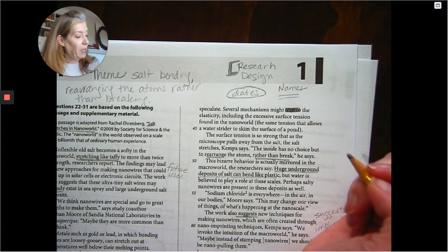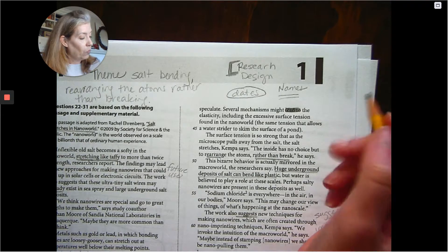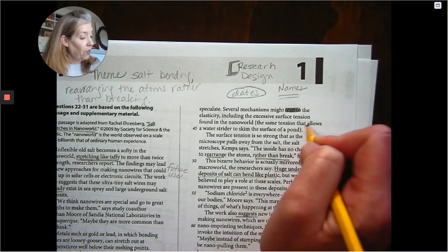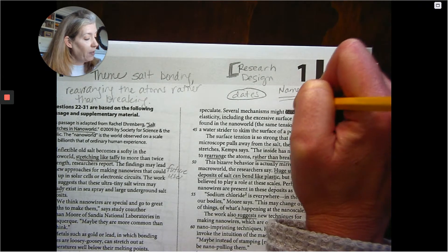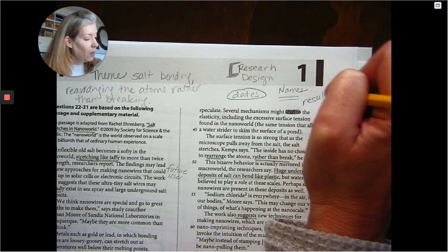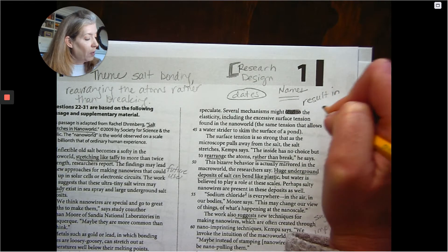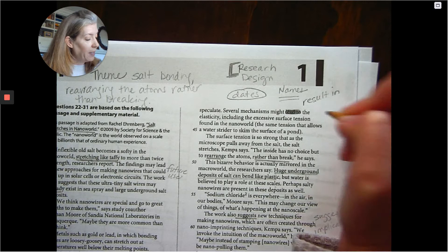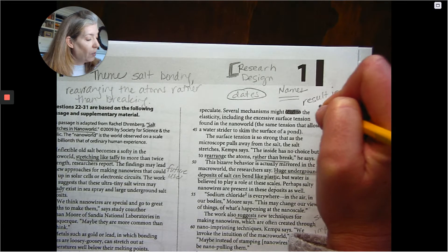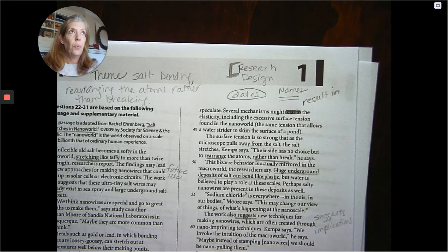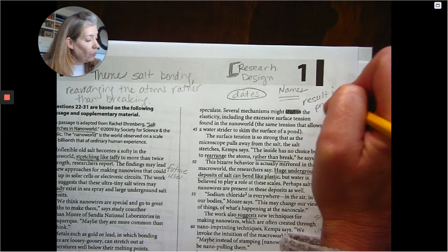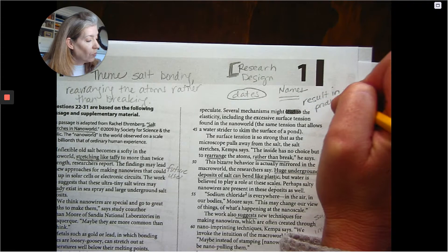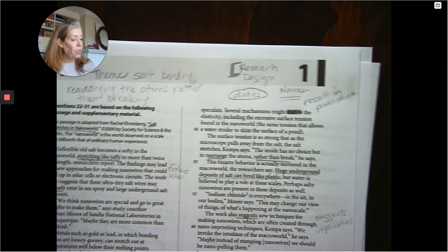Several mechanisms might... the electricity, including the excessive surface tension power in the nano world. So I'm going to say result in. Several mechanisms might result in, a simple word, like being the product of. Not produce. Result in or produce.